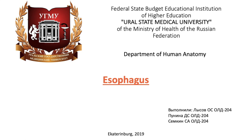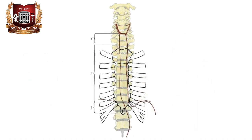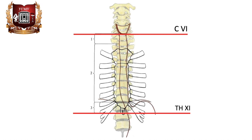Hi everyone! Today we are going to talk about the esophagus. The esophagus is an extension of the pharynx and a narrow tube designed to promote food into the stomach. Its beginning corresponds to the level of the 6th cervical vertebra, and its confluence with the stomach is at the level of the 11th thoracic vertebra. Its length is from 23 to 25 centimeters.